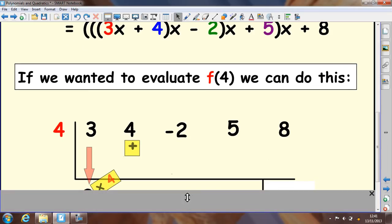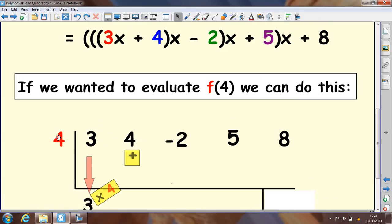In the table, we put x at the side here. The next bit we do is we put the coefficients here. So, this 3 in front of the x we put here. The 4 we put here. The -2 we put here. The 5 we put here. And finally the 8 down below.